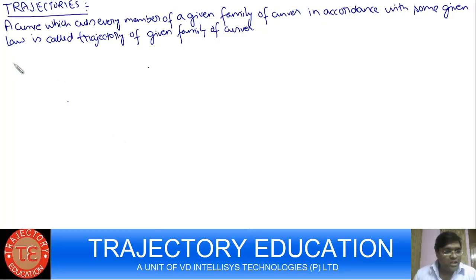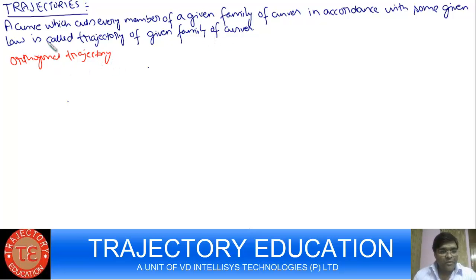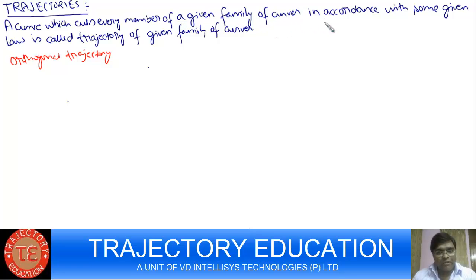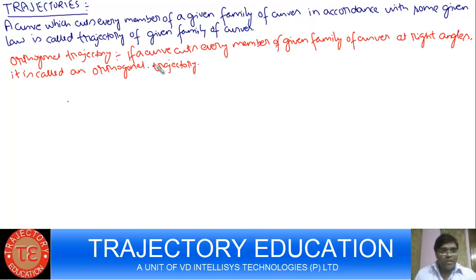In our chapter we are basically concerned about orthogonal trajectory. We have to find the orthogonal trajectory for a given family of curves. The orthogonal trajectory will be a curve which cuts every member of a given family perpendicularly — orthogonally. It cuts perpendicularly. A set of curves which cuts every member of the given family of curves orthogonally is called the orthogonal trajectory.